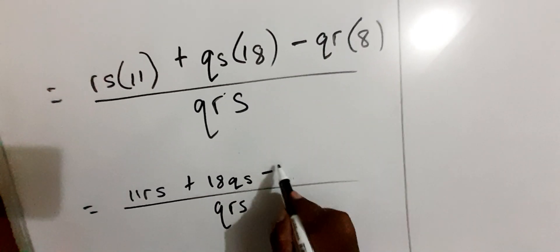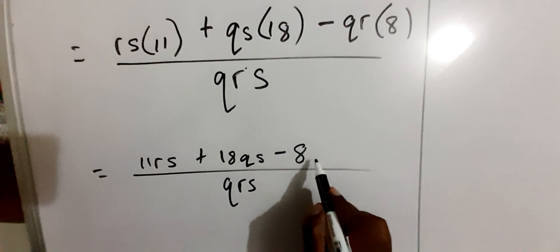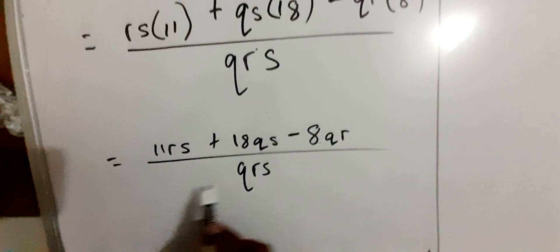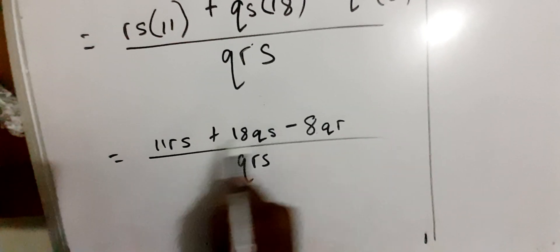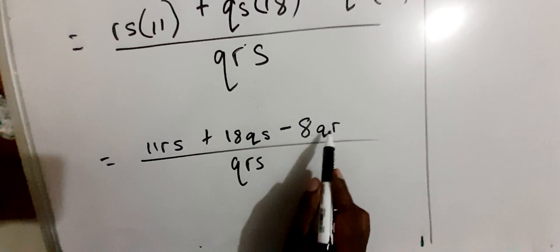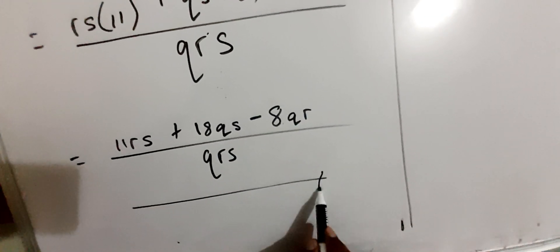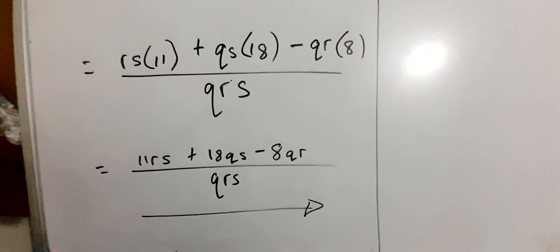minus 8QR. Now, these are unlike terms: 11RS, QS, and QR, so we don't process the answer any further as a result.